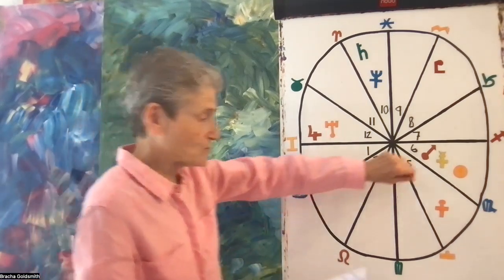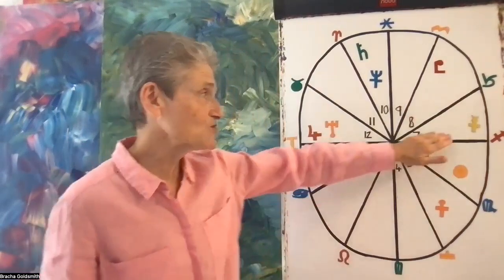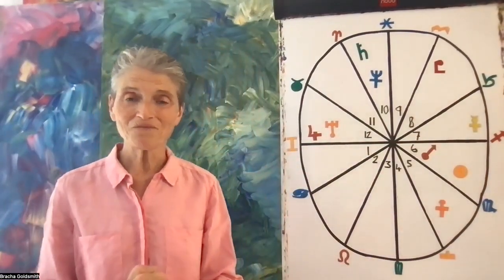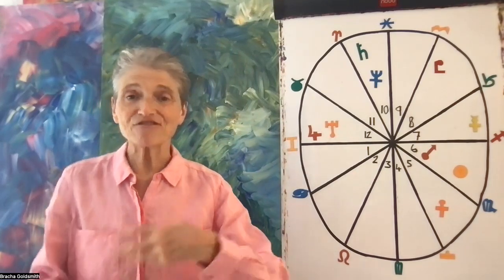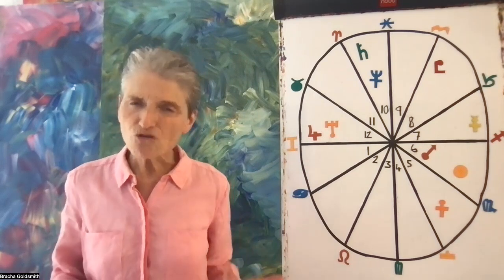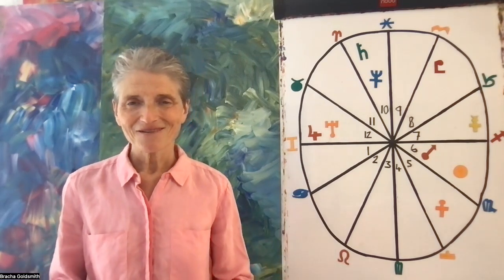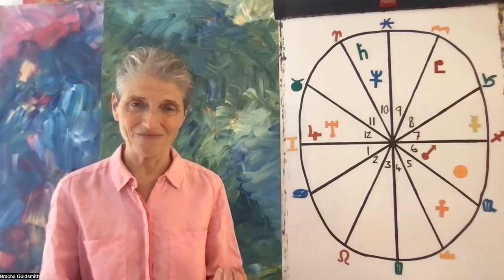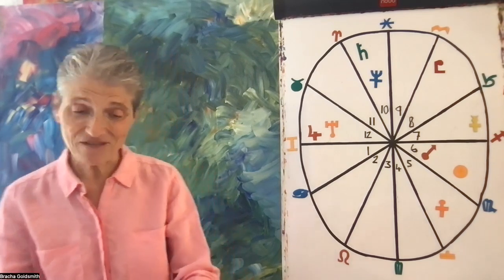On the 11th of the month we've got Mercury coming into this relationship area. So you might be thinking about relationships more, maybe a particular relationship that you want to have a discussion about or resolve something. There's an opportunity for some clear communication with Mercury happening in this seventh house for you.